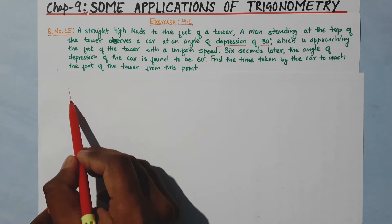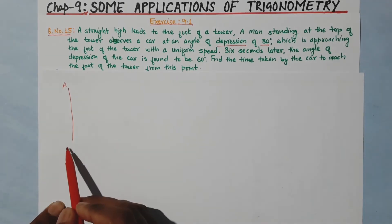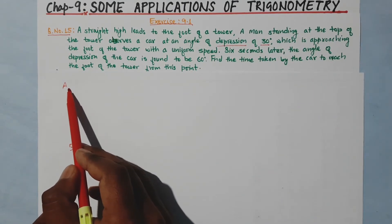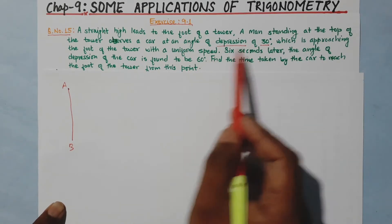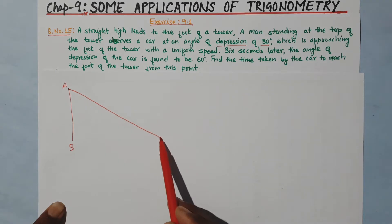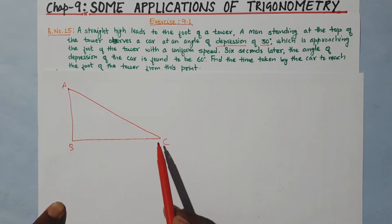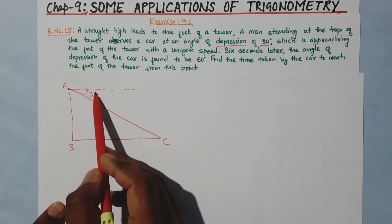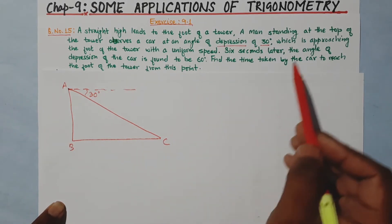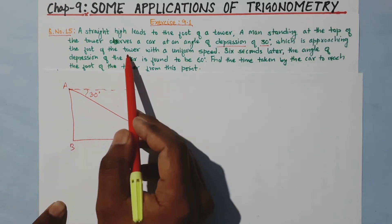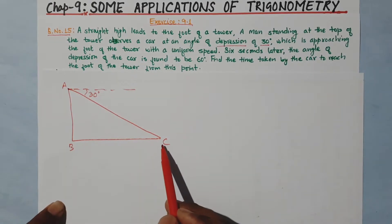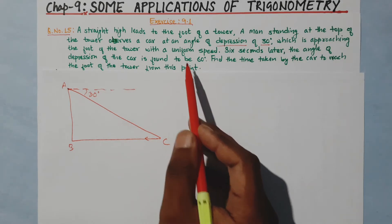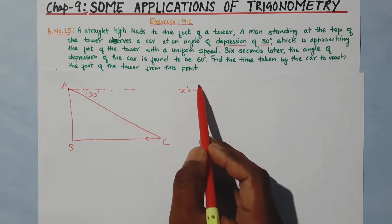Suppose AB is a tower, and a man is standing at the top of this tower. The car is observed at position C, at an angle of depression of 30 degrees. The car is approaching the foot of the tower with a uniform speed. Suppose the uniform speed is x kilometers per hour.